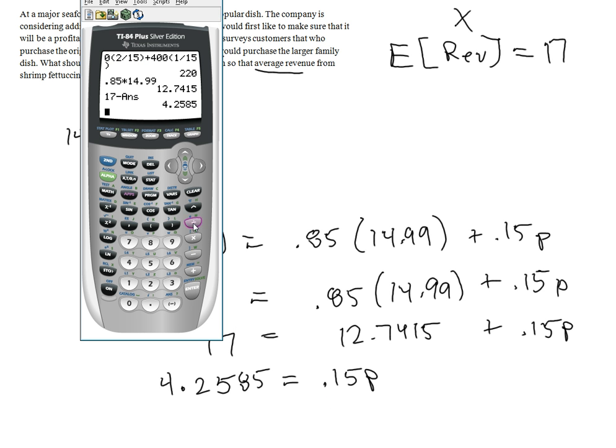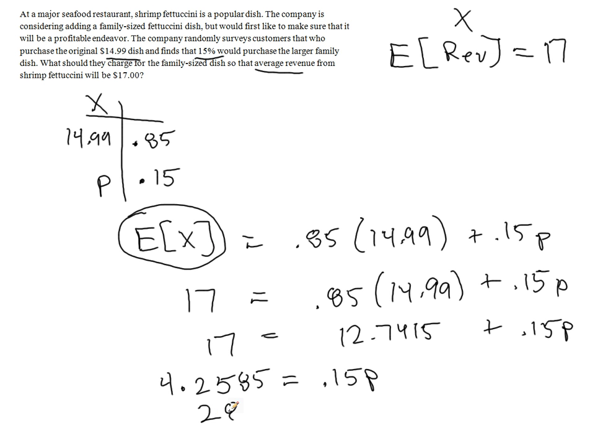And so now we divide that value by 0.15, and we determine that they should charge $28.39 for this family-sized dish in order to be able to get an expected revenue of $17 from this particular shrimp fettuccine dish. Now this is not their total average revenue overall for their company, but they are trying to do some analysis and figuring out what will help keep them in business, and this is what they should charge. That's assuming that 15 out of every 100 people do end up going with this new dish.